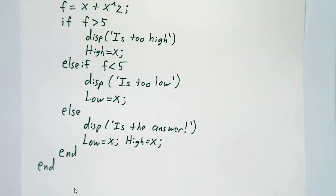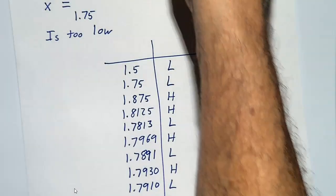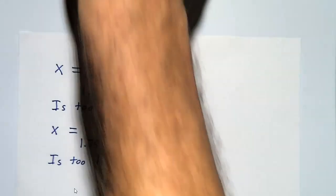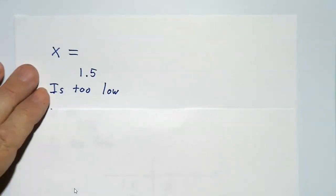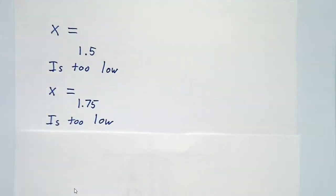If you run this program, then you get output that looks like this. It says x equals 1.5, and then it says it's too low. And then it figures out the next one, x equals 1.75, and it's too low. And it keeps going.